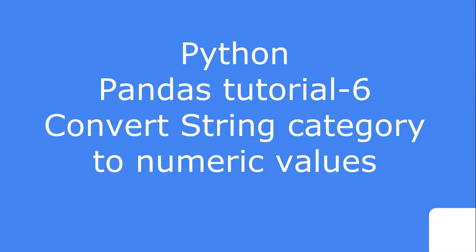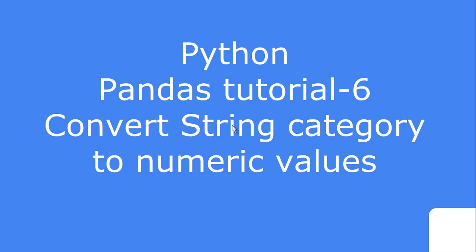Hello friends. This is the sixth video tutorial inside the video lecture series on data analysis with pandas. In this tutorial, we are going to see how you can convert the individual string values of an individual column, which is organized into different categories, and how you can convert those values into numerical values.